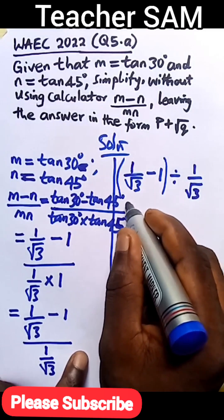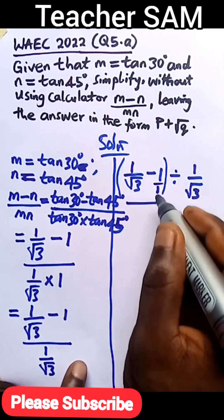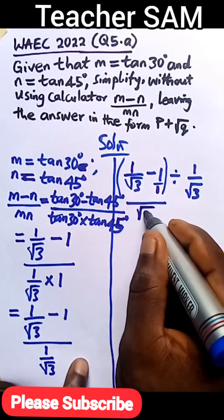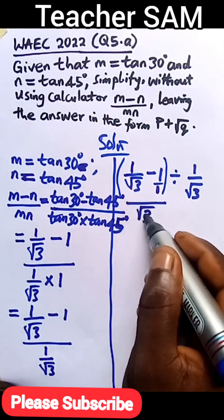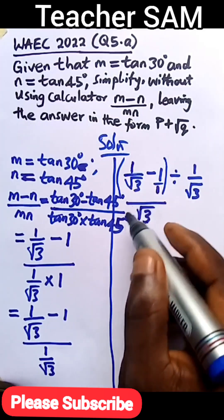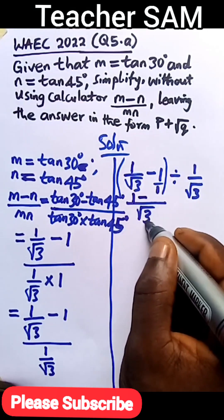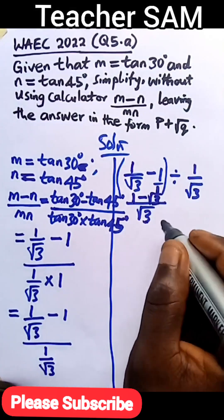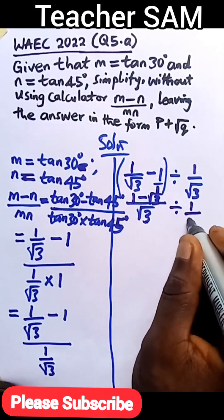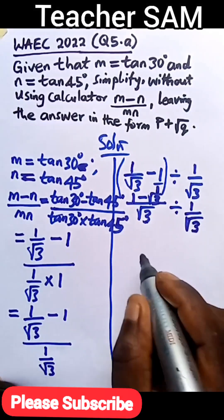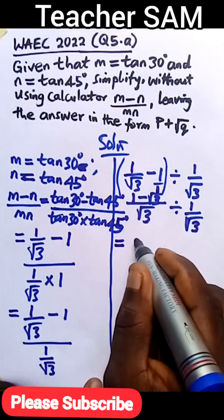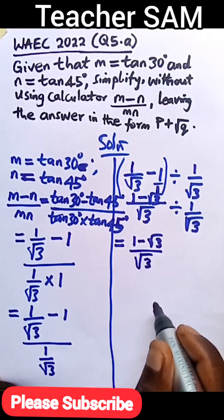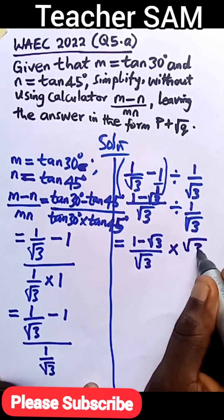Now we can solve this. The denominator is root 3, and the LCM is root 3. Root 3 divided by root 3 gives 1, so 1 times 1 is 1, minus root 3. So the numerator becomes 1 minus root 3, all over root 3. Now divide by 1 over root 3. This gives 1 minus root 3 over root 3, times root 3 over 1.